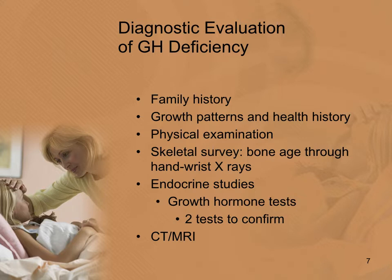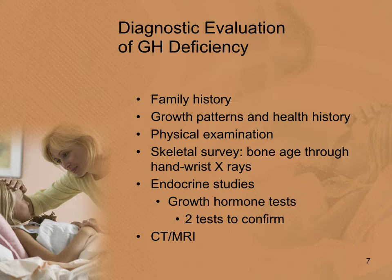For diagnosis, we look at family history, individual growth patterns, and health history. We do a general physical exam and skeletal survey to look at bone age and determine growth remaining. We also do endocrine studies — giving two medications at different times to stimulate growth hormone, then drawing blood at set intervals to see if secretion meets expectations. Insurance requires two confirming tests due to the expense of growth hormone replacement. We also do a CT or MRI to evaluate for a tumor.